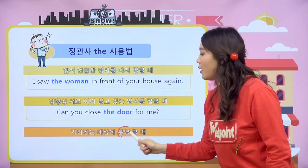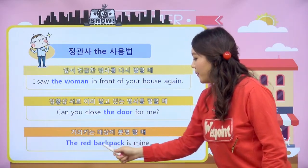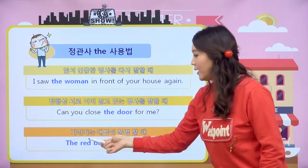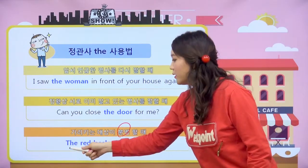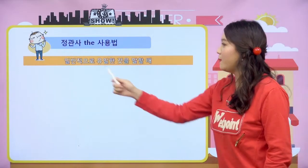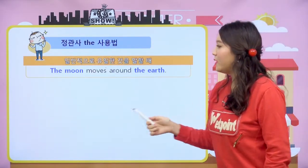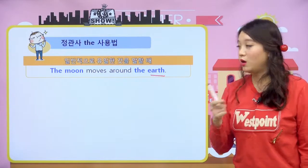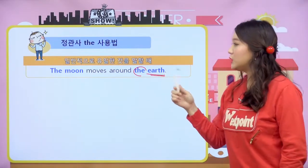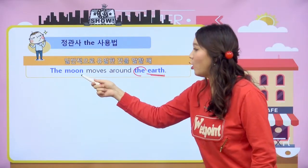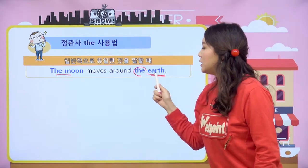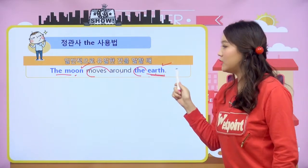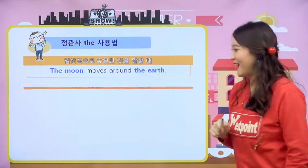세 번째, 가리키는 대상이 분명할 때: The red backpack is mine — 저기 있는 저 빨간 가방 내 거야. 저 빨간 가방이라고 가리키는 대상이 분명하기 때문에 앞에 the가 쓰였다. 네 번째, 일반적으로 유일한 것을 말할 때: The moon moves around the earth — 지구는 이 세상에 유일하게 하나밖에 없죠. 달도 이 세상에 하나밖에 없죠. 그렇기 때문에 the moon, the earth가 됩니다.